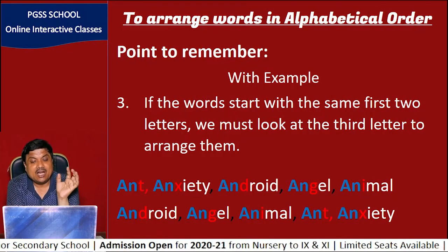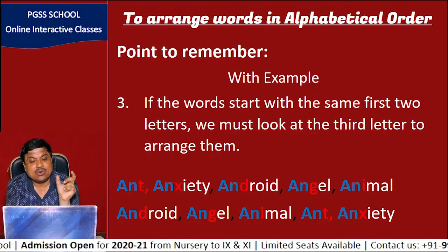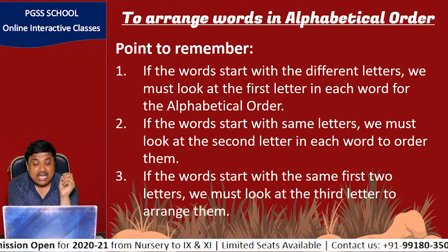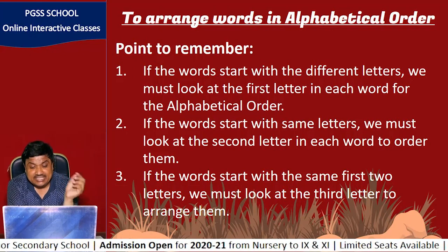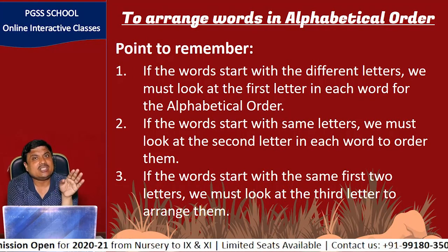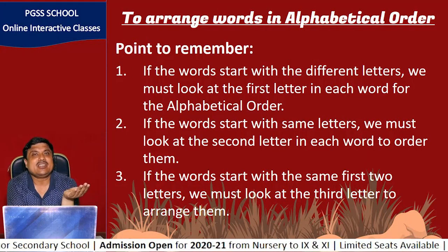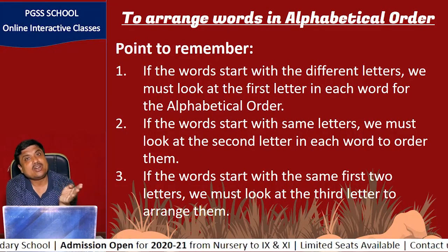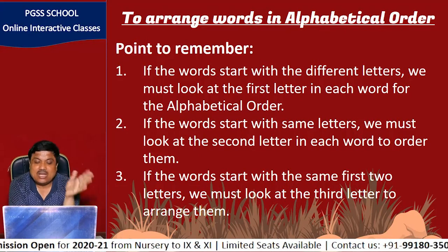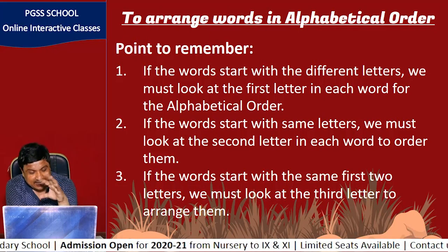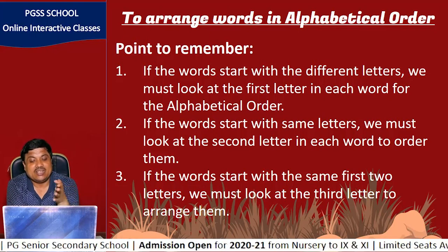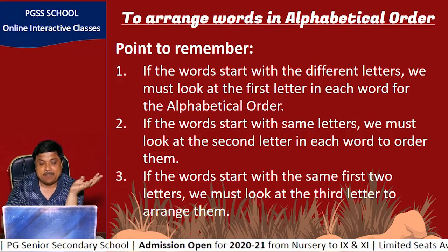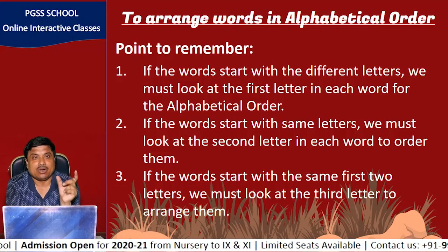These three rules can help you understand how to write words in alphabetical order. If the initial three letters are the same, we write them in proper alphabetical order based on the fourth letter. In this way you can write any kind of words in proper alphabetical order and find any word in the dictionary properly.